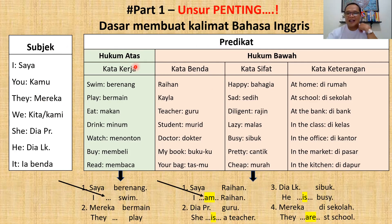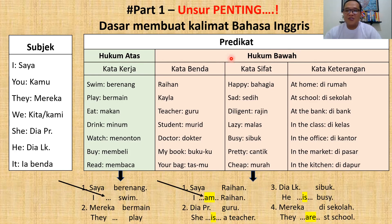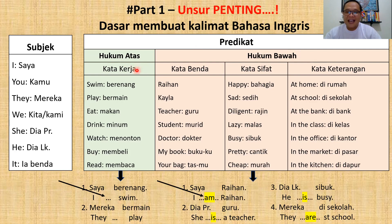Awas, hati-hati di sini. Ada dua warna tabel yang berbeda. Predikat saya bagi menjadi dua: ada hukum atas sama hukum bawah. Perhatikan, ini tidak pernah dipelajari di tempat lain. Yang hukum atas itu adalah kata kerja. Kata kerja itu apa? Aktivitas — di mana bagian tubuh kita yang kita fungsikan, dan itu berarti sebuah pekerjaan. Itu adalah kata kerja. Kemudian hukum bawah ada tiga: ada kata benda, ada kata sifat, ada kata keterangan.